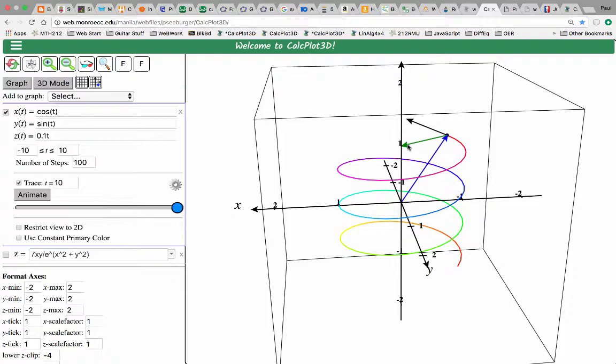The green vector is the acceleration vector, and that's showing how the motion is accelerating. In this particular parameterization of this helix, the acceleration happens to be pointing to the z-axis, to the center of the circular motion. That's because this happens to have a constant speed, and the velocity and acceleration vectors are orthogonal to each other at all points.